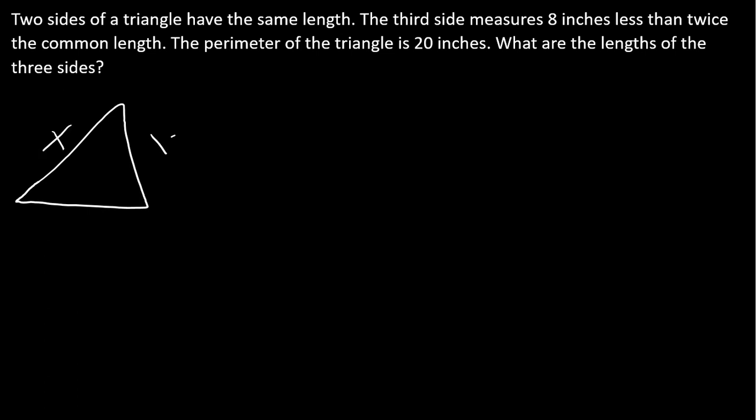I've got a triangle. I have two sides that are the same length. I don't know what that length is, so I'm going to call that length x. This third side measures 8 inches less than twice the common length, so twice the common length would be 2x, and then I need to subtract 8 inches from that.